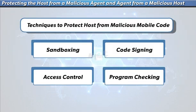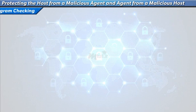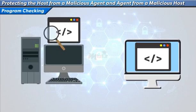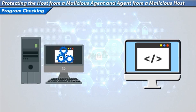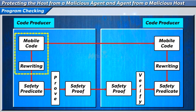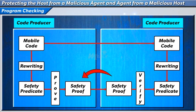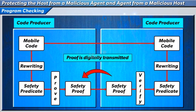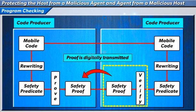The last technique is program checking. The host is allowed to determine whether the program code provided by another system is safe to install and execute. The basic idea of PCC — Proof Carrying Code — is that the code producer is required to provide an encoding of a proof that the code adheres to the security policy specified by the code consumer. This proof is encoded in a form that can be transmitted digitally, allowing the code consumer to quickly validate the code using a simple, automatic, and reliable proof-checking process.